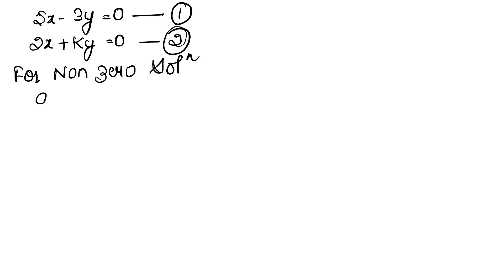When a1 upon a2 is equal to b1 upon b2. In case of zero solution, when a1 upon a2 is not equal to b1 upon b2. This is zero solution, but we have to do non-zero solution.